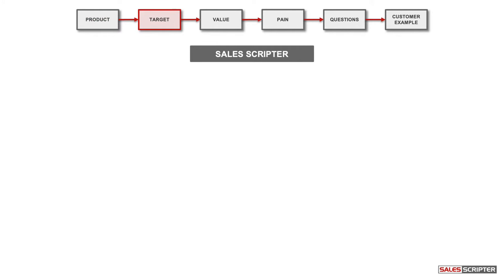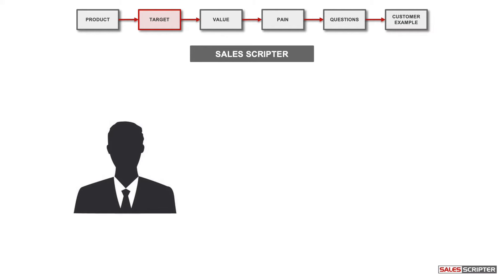The next step is to take a step back and think about who you're going to be communicating with when using this sales message. This step is optional — you could skip it and create a broad sales message for all prospects, which is a good place to start. But when you really want to get to the next level, you can create different sales messages targeted to the different types of prospects you sell to. That allows you to talk about the key hot buttons and areas of interest for that particular audience, improving your ability to grab their attention and separate you from the competition.